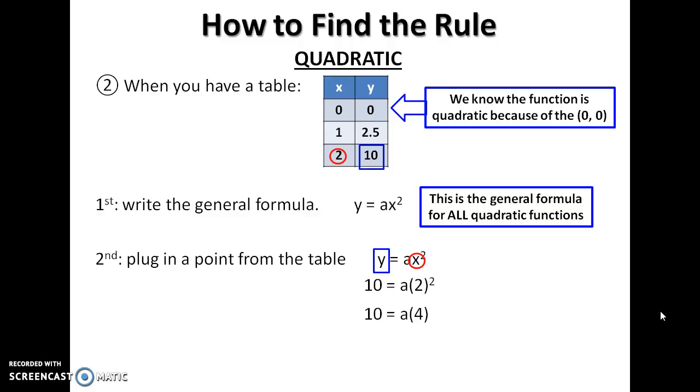Do exponent first. Divide both sides. That's the a value. Write it into the rule. That's it.